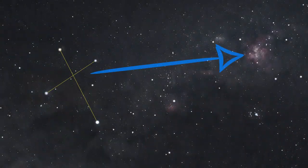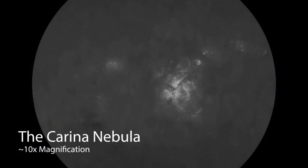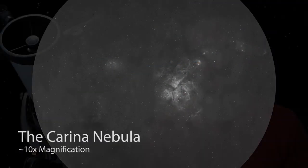On the other side of the southern cross, we have the great nebula in Carina, which in dark skies is a great target for binoculars, but it is a fantastic target in medium-sized telescopes.